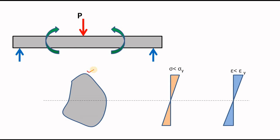Consider this as the cross section of your beam — this is any arbitrary shape. Due to this moment, the strain profile is linear from the basic assumption. If this is the neutral axis, the strain is zero here, and at the topmost fiber the strain is maximum. Due to this strain, a stress profile is also generated within the section. Similar to the strain profile, at the neutral axis the stress is zero, and at the topmost or bottommost fiber it is maximum.